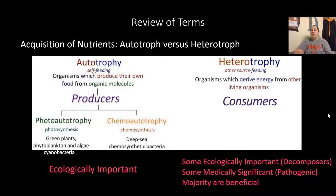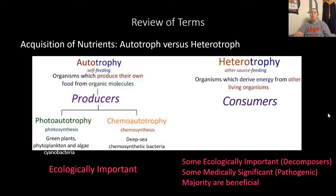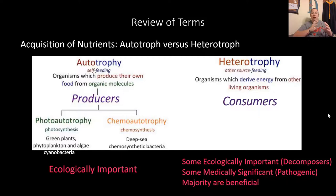Heterotrophs also have ecological importance as decomposers, consuming and recycling dead material. Some heterotrophs are medically significant because those are the pathogenic types — they feed on our cells and make us sick. But the majority of microorganisms, whether autotrophs or heterotrophs, are going to be beneficial, not pathogenic.